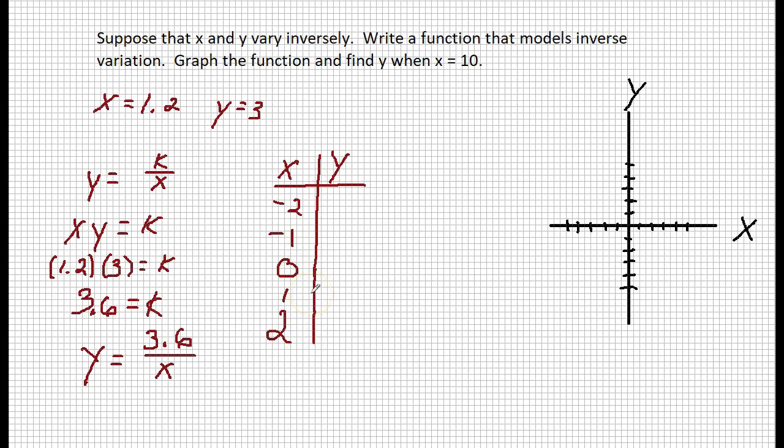So if I take my negative 2, I say 3.6 divided by the x value, negative 2, and I get negative 1.8. Then I take 3.6 divided by negative 1, and I'm going to get negative 3.6. Now, here's a problem. When I take 3.6 divided by 0, you can't divide by 0. This is undefined.